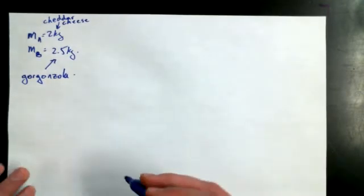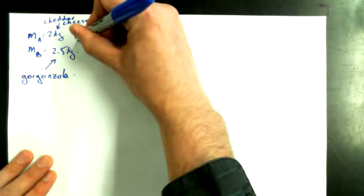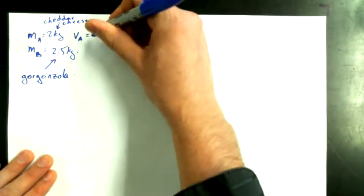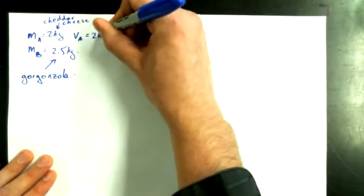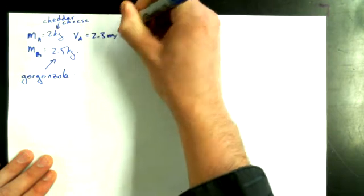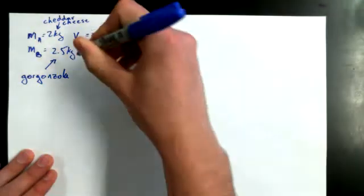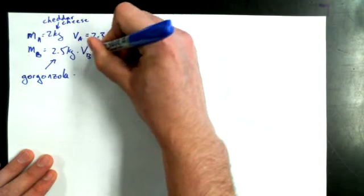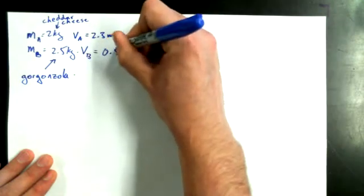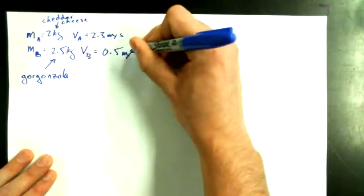Here's the other information I want to give you. VA is going to be equal to 2.3 meters per second.